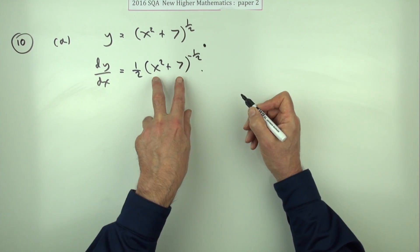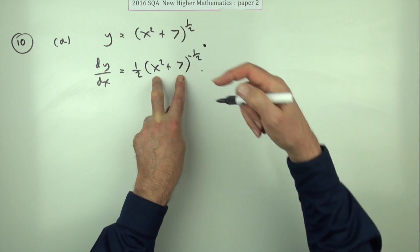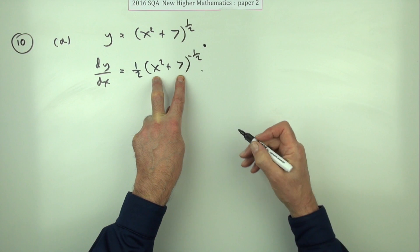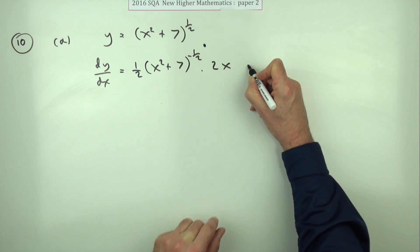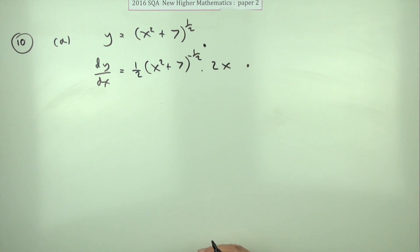And then multiply it by the inner derivative. You look inside at the inner function, and the derivative of x squared plus seven is just 2x. That gets you the two marks without even simplifying it.